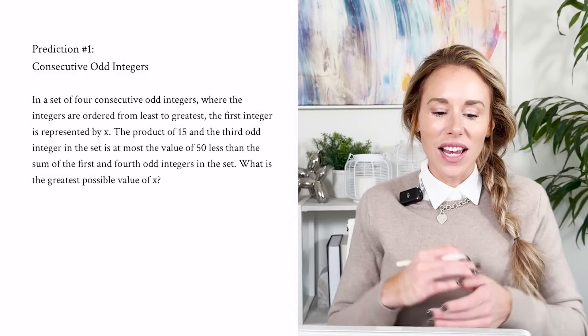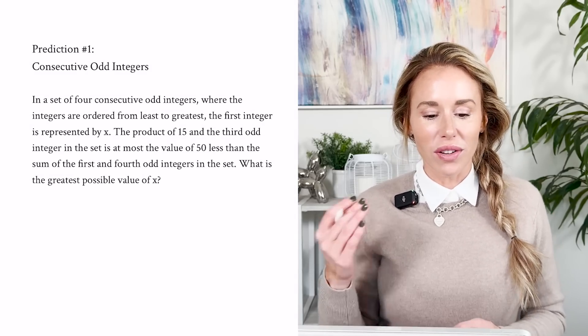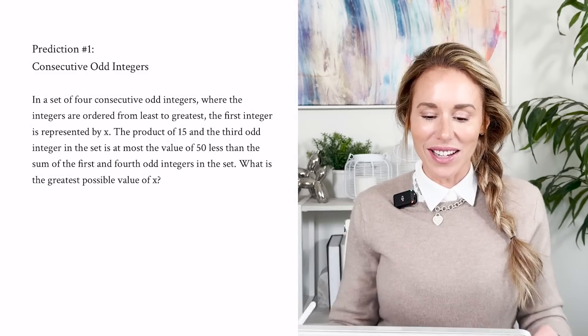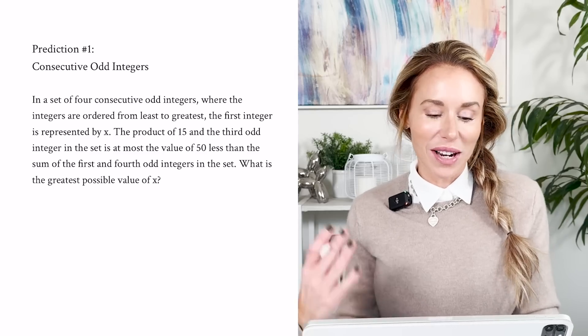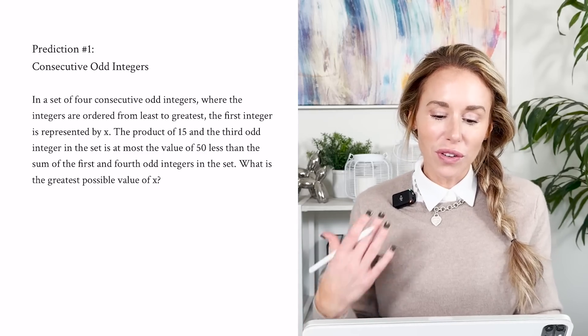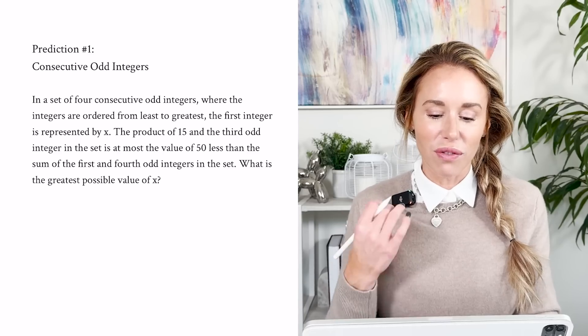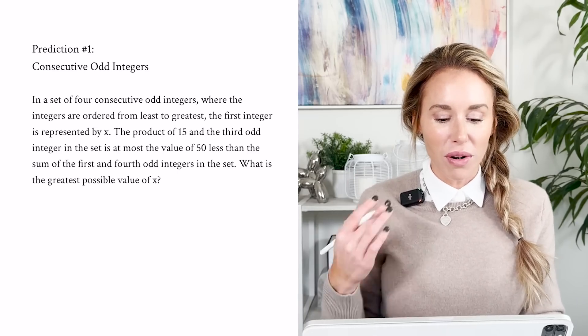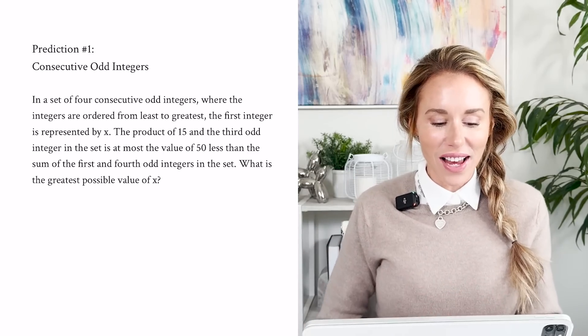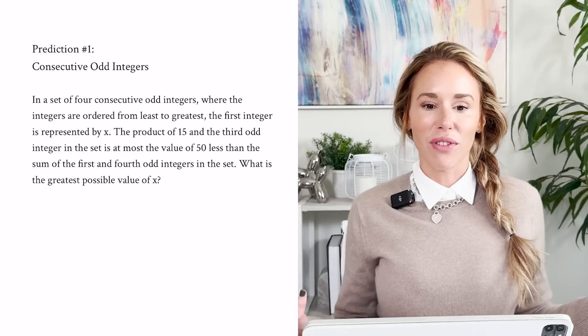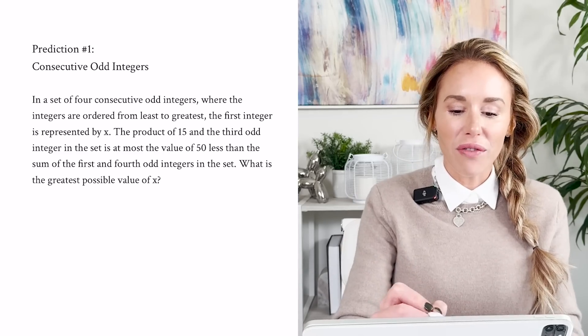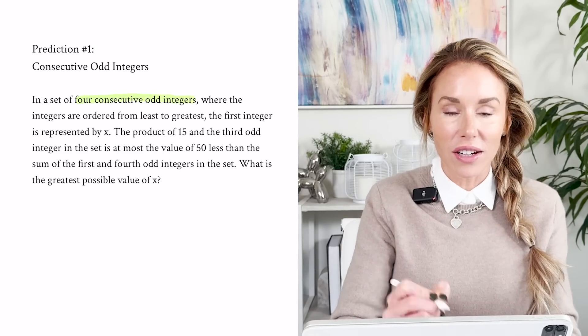It says, in a set of four consecutive odd integers where the integers are ordered from least to greatest, the first integer is represented by x. The product of 15 and the third odd integer in the set is at most the value of 50 less than the sum of the first and fourth odd integers in the set. What is the greatest possible value of x?